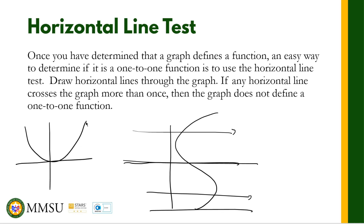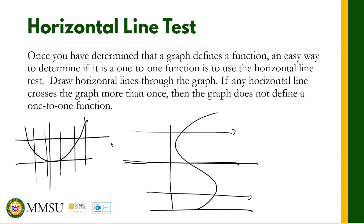For example, take a parabola. If you pass a vertical line through it, it only intersects the graph at one point, so it is a function. But it is not one-to-one, because if you pass a horizontal line through it, it intersects at two points. So a parabola that opens upward is a function but not a one-to-one function.